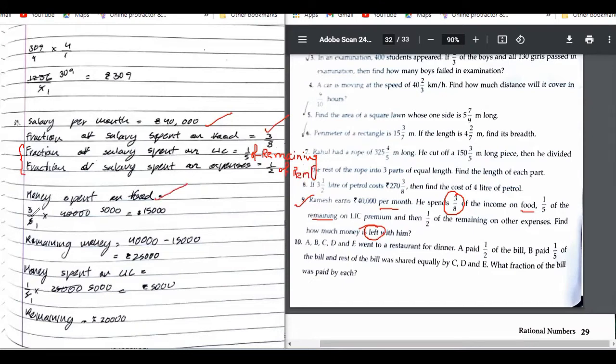Money spent on food. So simple multiplication, 3/8 of 40,000. So this will be 8 times 5, 40, 5000, 15,000 rupees is on the food.